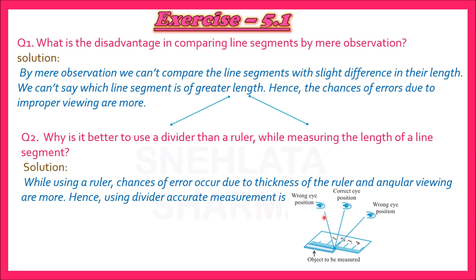Ruler se length measure karte time correct eye position ka hona bahut zaroori hai. Agar main yahan se observe karungi to line segment ki length thodi si badi ho jayegi, aur agar yahan se observe karungi to chhoti ho jayegi. Correct eye position hamesha object ke upar hona chahiye. Is type ka error jo correct eye position par depend karta hai, usko hum parallax error kehte hain. Lekin agar isi length ko main divider se measure karungi to yah error bilkul zero ho jayega. So it is always better to use a divider than a ruler.